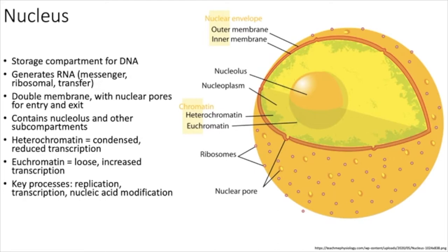The first organelle is the nucleus — the storage compartment for your DNA. Its main job is to keep DNA organized so that your RNA polymerases can grab onto it and make RNA. We generally think about messenger RNA, though there are other types: ribosomal RNA and transfer RNA, which is what ribosomes use.